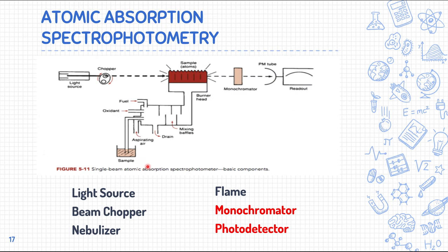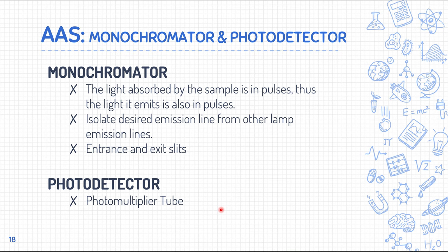We discussed the light source, beam chopper, nebulizer, and atomizer. Now we go to the monochromator and photo detector. The monochromator controls the light absorbed by the sample. Since the light absorbed by the sample is in pulses, the light it emits is also in pulses. The monochromator isolates the desired emission line from other lamp emission lines using entrance and exit slits.